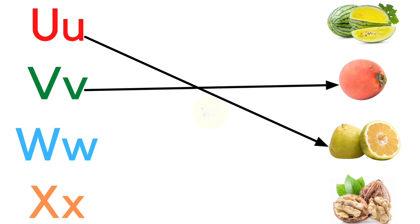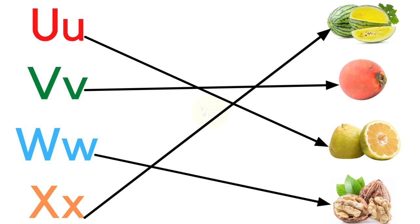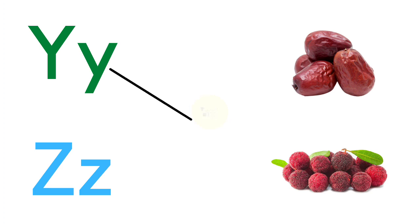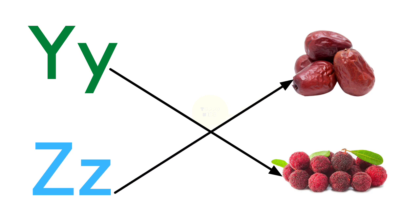V for velvet apple, W for walnut, X for ziguo, Y for yangmi, Z for ziziphus jujuba.